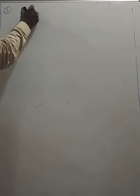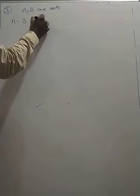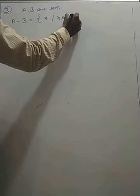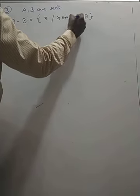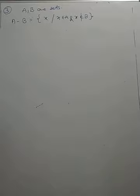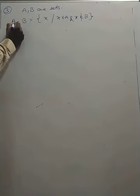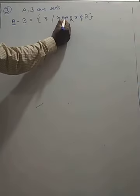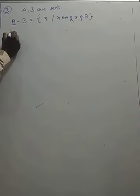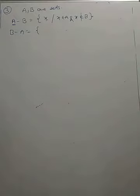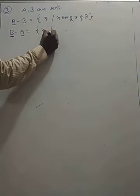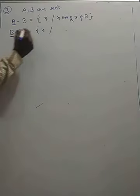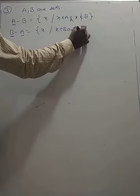The third basic operation is difference of two sets. If A and B are two sets, A minus B is defined as {x such that x belongs to A and x does not belong to B}. Similarly, B minus A is {x such that x belongs to B and x does not belong to A}. There is a difference between A minus B and B minus A.